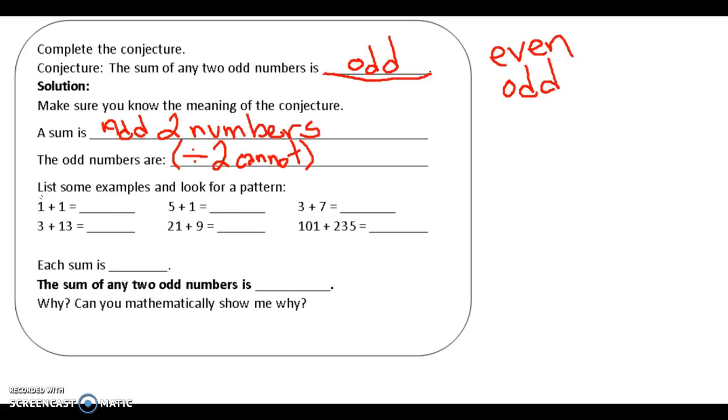Let's see this another way. So an odd number - one plus one is two. Three plus thirteen, sixteen. Five plus one, six. Twenty-one plus nine, thirty. Seven plus three, ten. One oh one plus two thirty-five, three thirty-six. Well, so each sum is even. So the sum of any two odd numbers is actually even. So I was wrong up here.